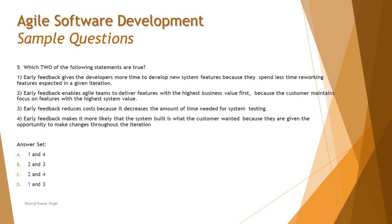Statement three: 'early feedback reduces cost because it decreases the amount of time needed for system testing.' This is a tricky statement. System testing is more minimal in agile and we spend more time in unit and integration testing, so many may think this is true. However, due to frequent changes, regression scope increases — modifying a unit or interface can increase system testing needs. So statement three is not universally true and can be ruled out.